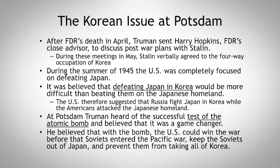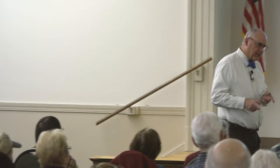At Potsdam, Truman heard of the successful test of the atomic bomb and told Stalin — who already knew through spies — saying we've got an interesting new weapon. Truman believed this was going to be a game changer: the U.S. would have the upper hand and could win the war before the Soviets entered the Pacific War, keeping the Soviets out of Japan and preventing them from taking all of Korea. At Yalta, Stalin had promised to declare war against Japan 90 days after V-E Day — May 8th, 1945 — meaning August 8th, 1945.